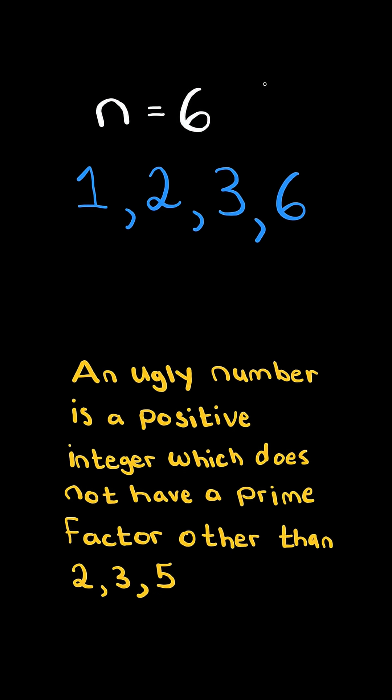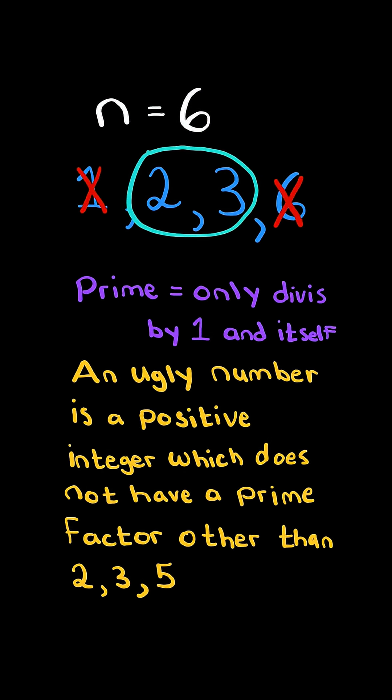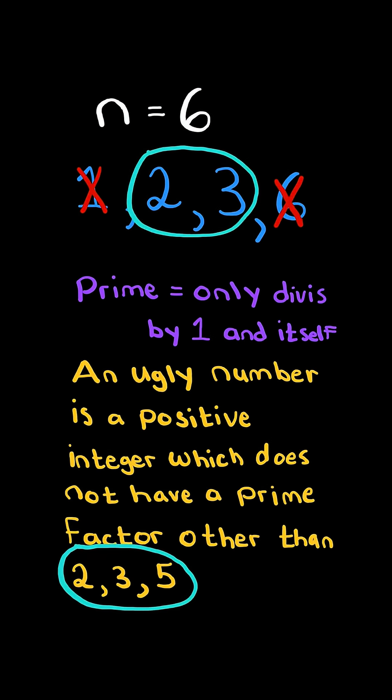Consider the factors of n: 1, 2, 3, and 6. Note, a prime number is only divisible by 1 and itself. 1 is not considered a prime number and 6 is not a prime number. 2 and 3 are the only prime factors and are in the prime factors of an ugly number. So 6 is an ugly number.